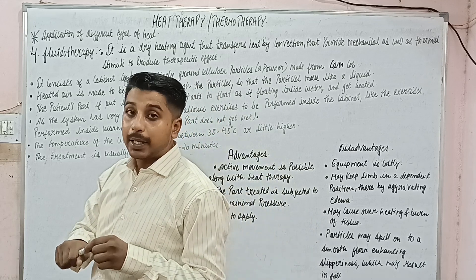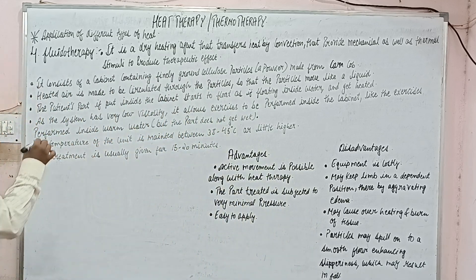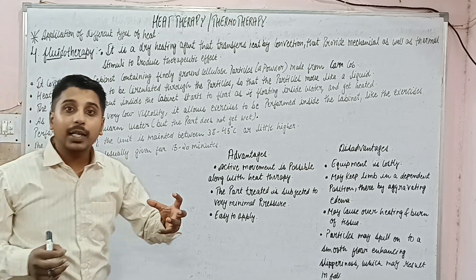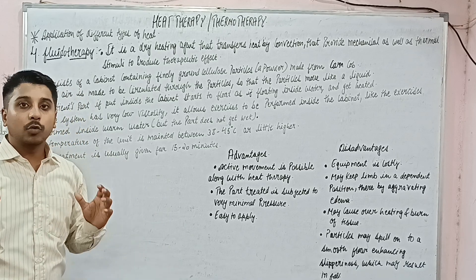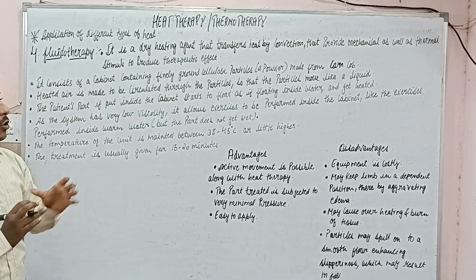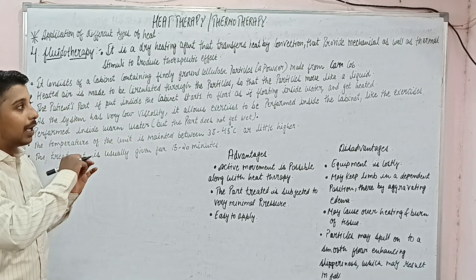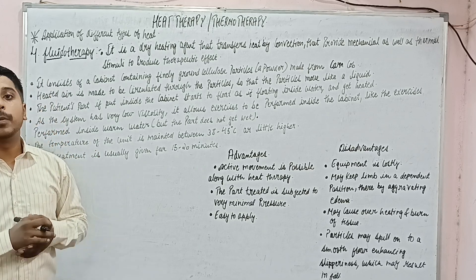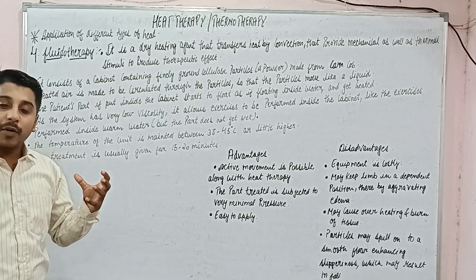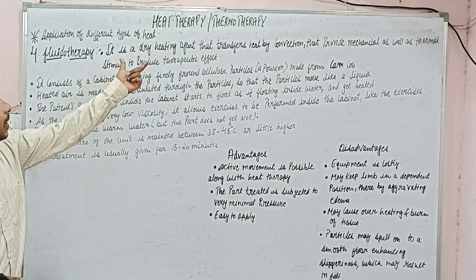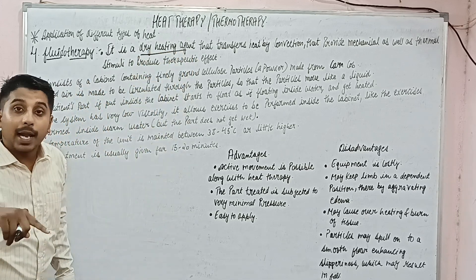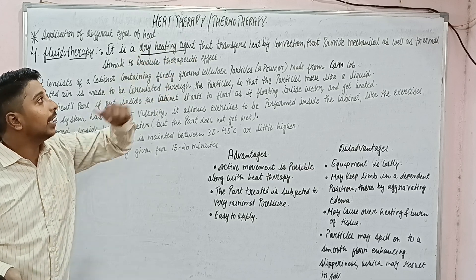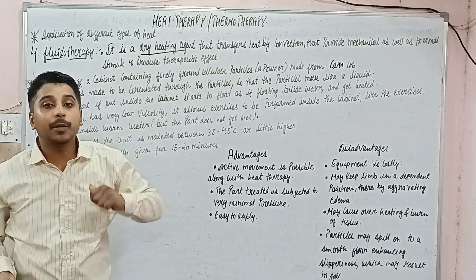What is fluidotherapy? As the name indicates fluid, but here it is not the actual fluid which is water. Here the particles of corn cob are used. You can see I am displaying an image — from the corn, if we remove all the corn, the part which is left is called corn cob. That part is finely crushed and used. It is a dry heating agent, whereas hydrocollator was moist heating. So it is a dry heating agent that transfers heat by convection.